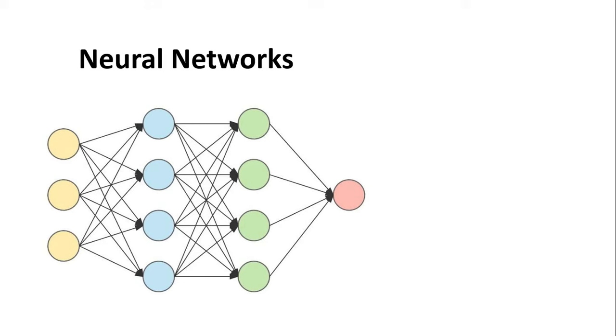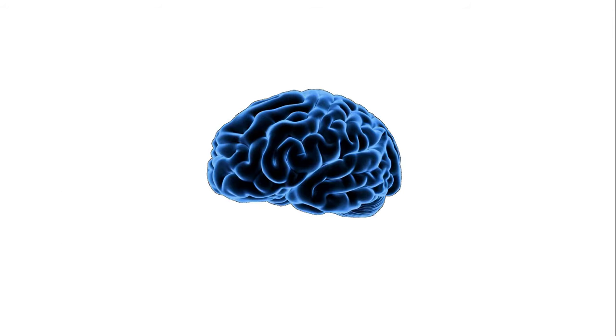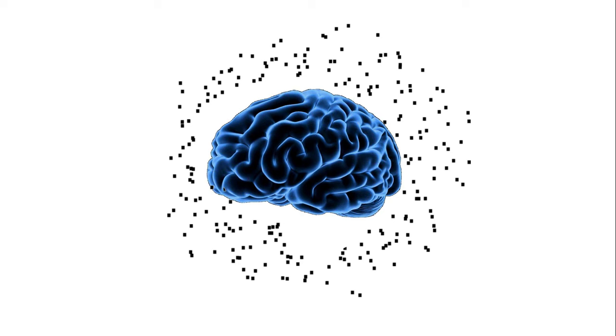To understand the working of a neural network, let us understand the working of the human brain first. The human brain has billions of neurons and trillions of connections between these neurons.